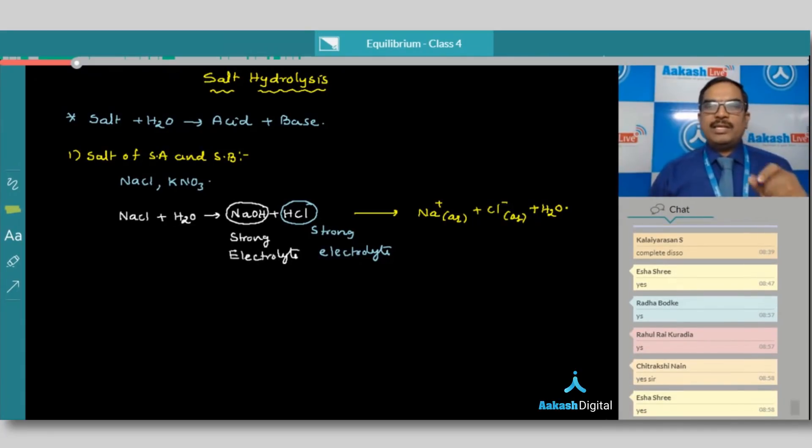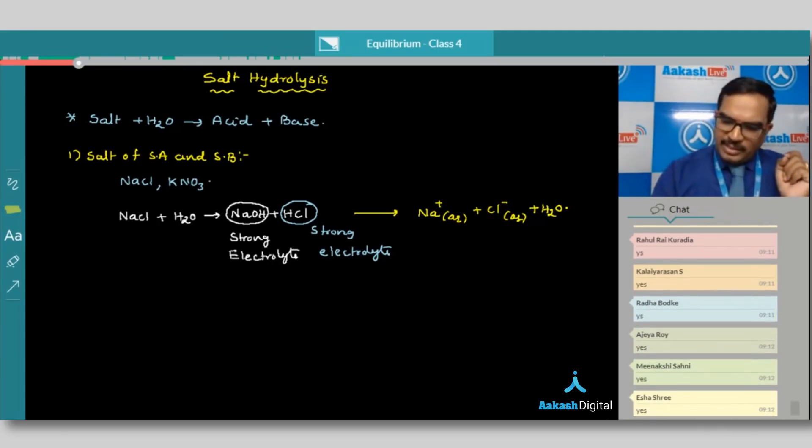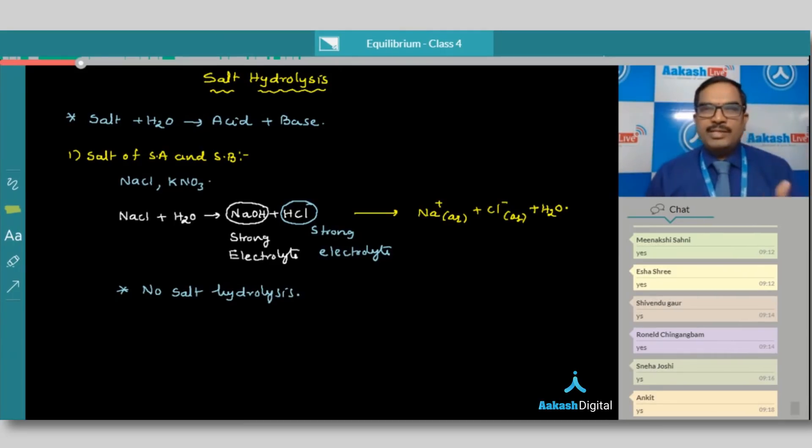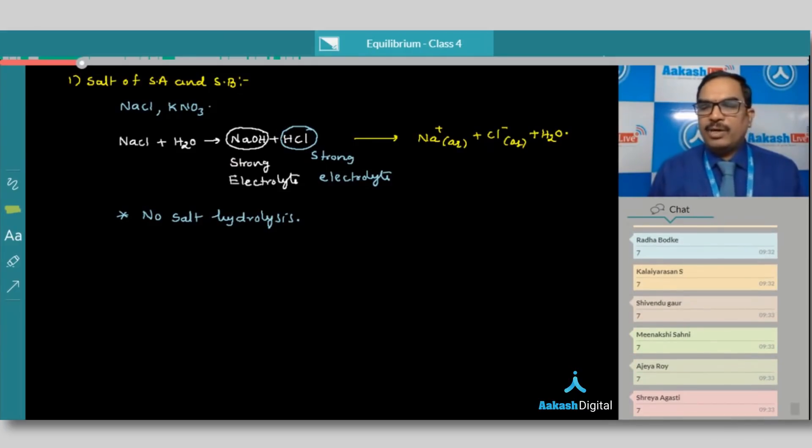That means in this case, we can conclude that these kinds of salts do not undergo any salt hydrolysis. Because if you see the definition, the resultant solution may be generally acidic or alkaline. Sometimes it may be neutral. So in this case it is neutral. In this case, the conclusion we can give here is no salt hydrolysis. What is the pH of the resultant solution? Of this category will be equal to 7. This is category 1.